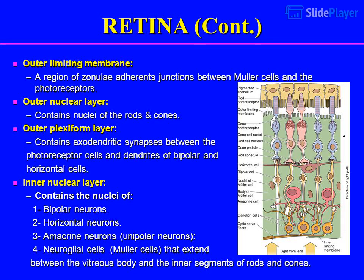Outer limiting membrane: a region of zonula adherens junctions between Müller cells and the photoreceptors. Outer nuclear layer: contains the nuclei of the rods and cones. Outer plexiform layer: contains axodendritic synapses between the photoreceptor cells and the dendrites of bipolar and horizontal cells.